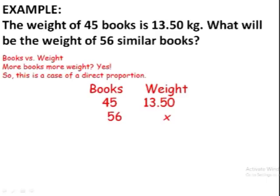Now, because it's a case of a direct proportion, in case of a direct proportion, this is what we do. Okay, we cross it. What do we mean by crossing? So, 45 is connected to x. It means that 45 times x equals 56 times 13.5. This is what we do in case of a direct proportion.